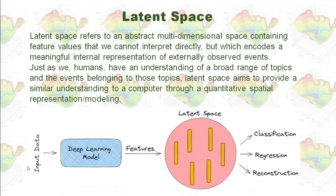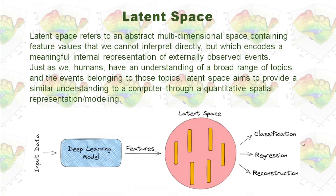So we have our input data — all those input data are our externally observed events. And we have our deep learning model. We want to use our deep learning model to extract features and put those features into this latent space. And with all those features in the latent space, we can do classification, regression, or reconstruction.